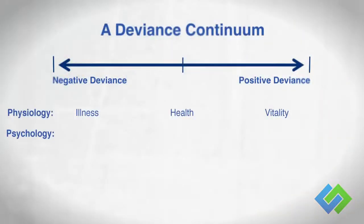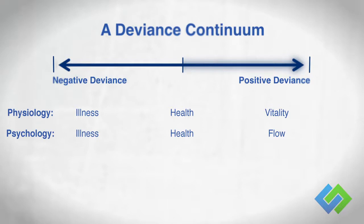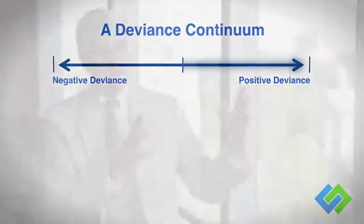Psychologically, on the left-hand side — the negative deviant side — would be stress, burnout, problems. Ninety percent of all psychological and medical research focuses on the difference between the left-hand side and the middle: how do you get people to be absent illness? We're going to be focused on the difference between the middle and the right-hand side. In psychological terms, that might be a state of flow, where you're using more of your brain capacity than normal, you lose track of time and physiological needs, and you're extraordinarily highly performing.